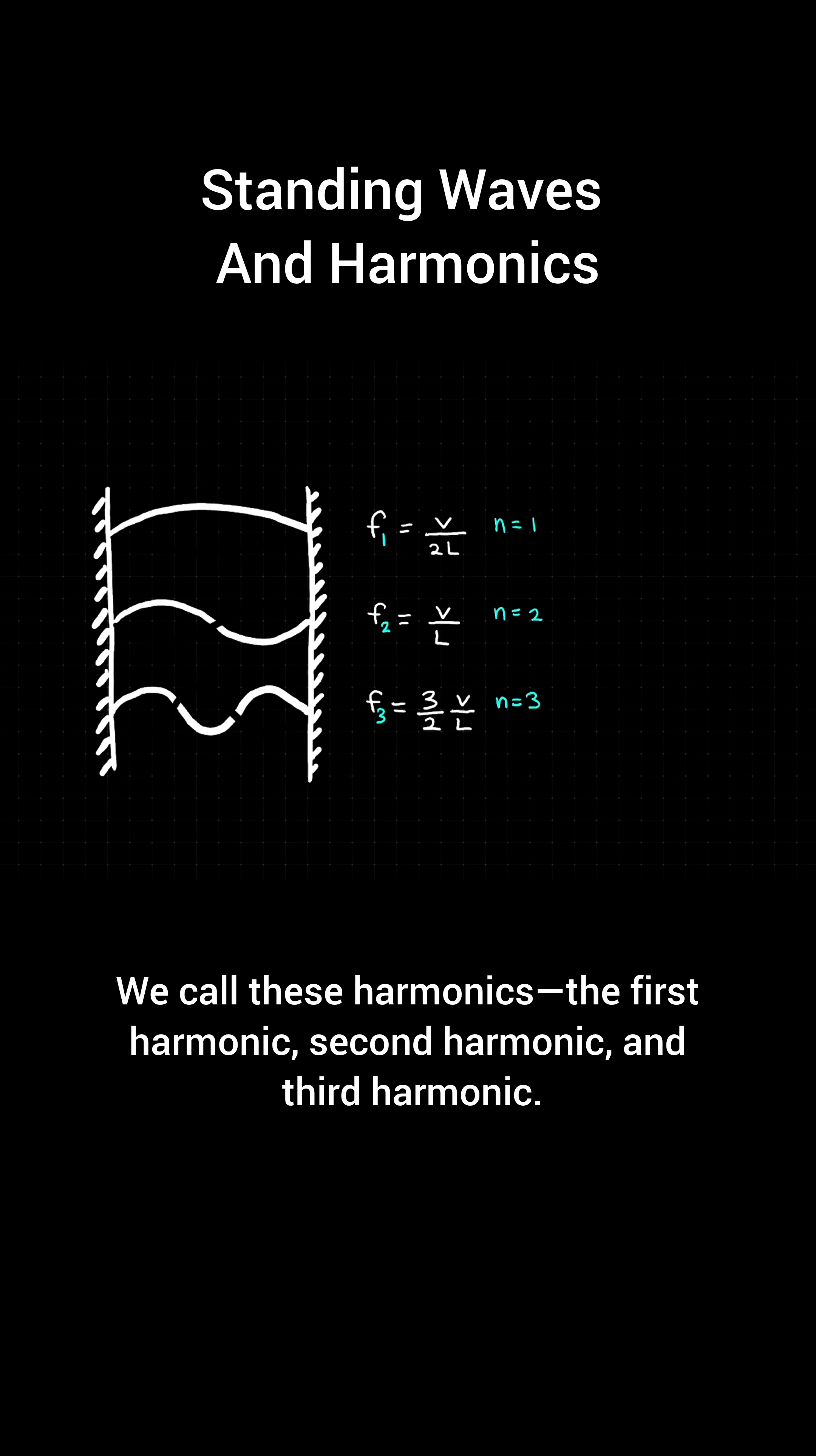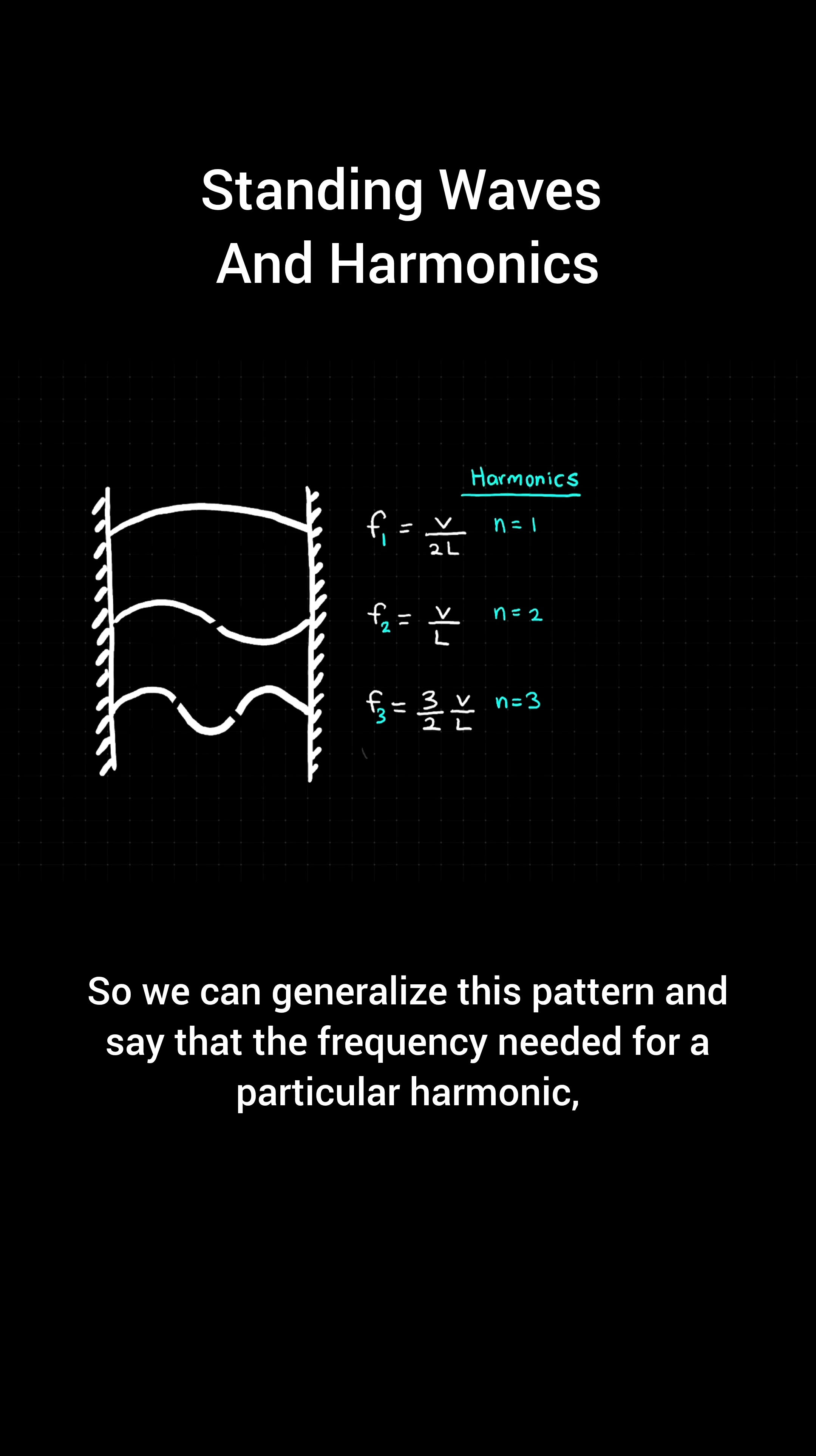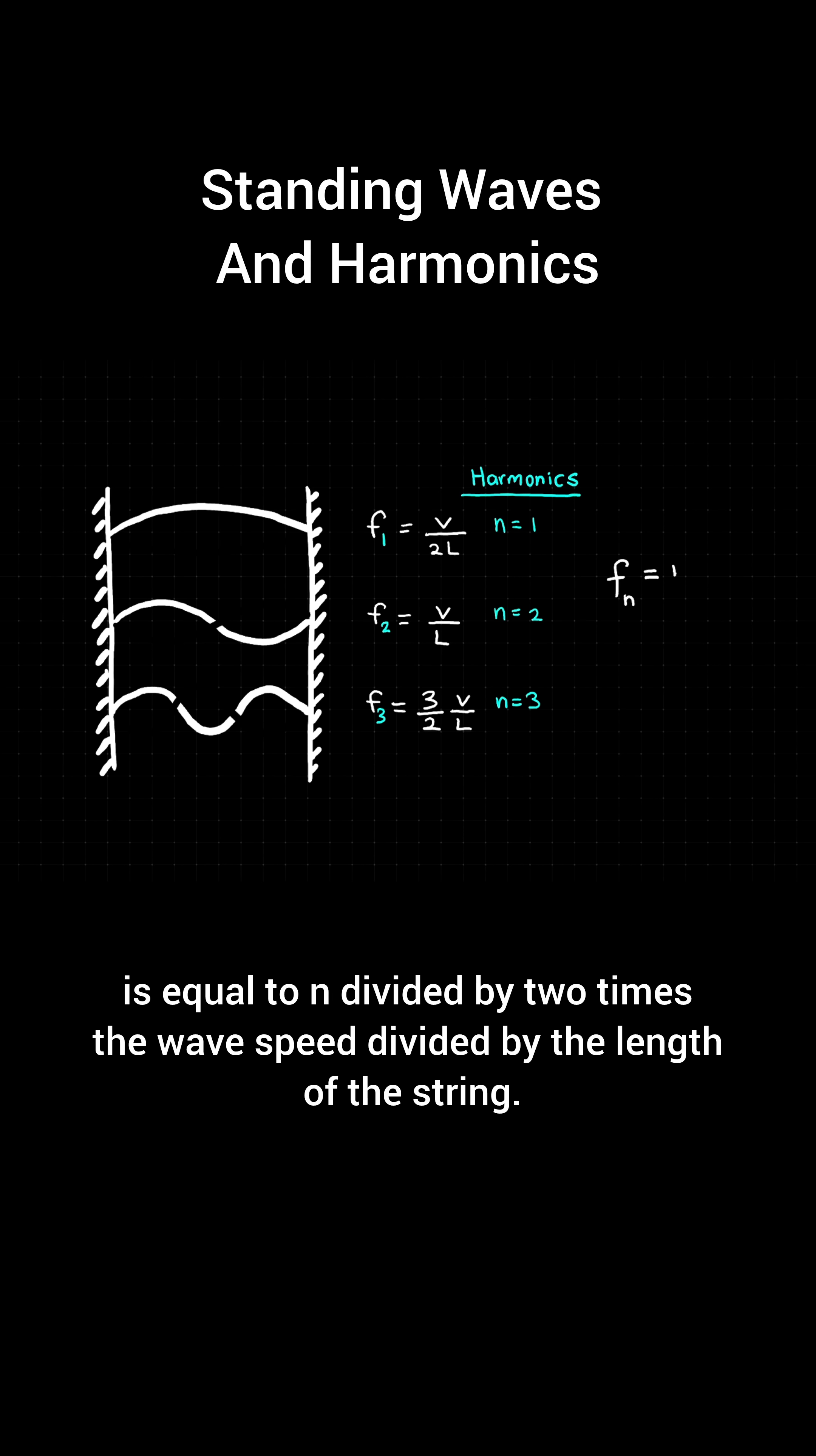We call these harmonics the first harmonic, second harmonic, and third harmonic. So we can generalize this pattern and say that the frequency needed for a particular harmonic is equal to n divided by 2 times the wave speed divided by the length of the string.